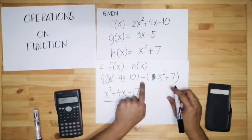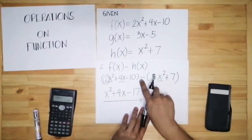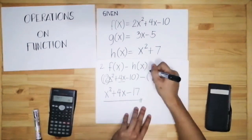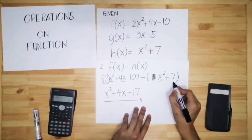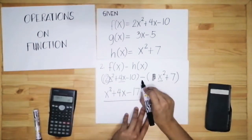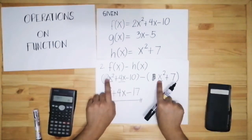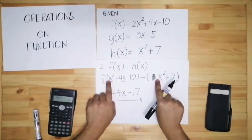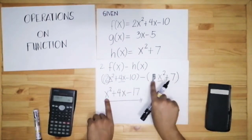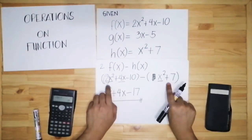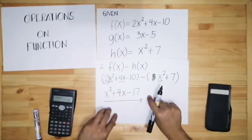There is another way to approach this. If you don't use a calculator, you can distribute the negative sign, which changes the signs inside the second parenthesis: x squared becomes negative x squared and 7 becomes negative 7. Then 2x squared plus negative x squared gives positive x squared. The result is the same. Just remember never to add the exponents when combining like terms. That's how you do subtraction.